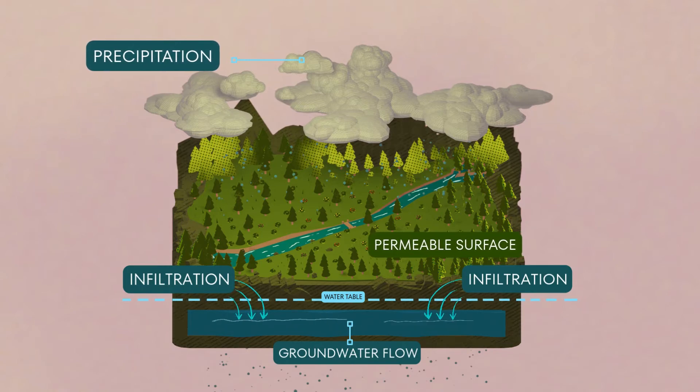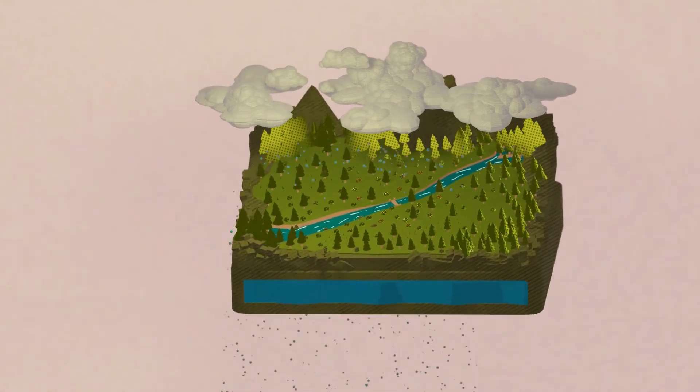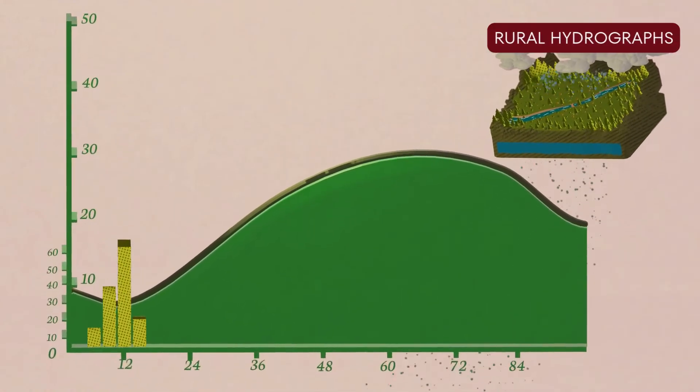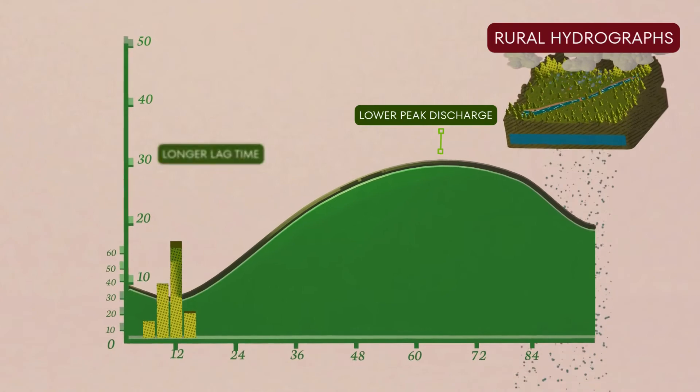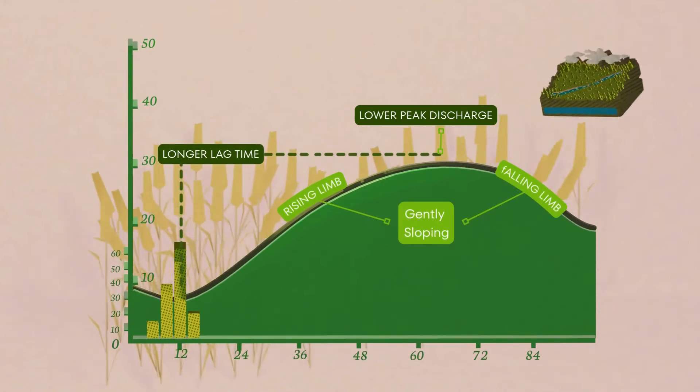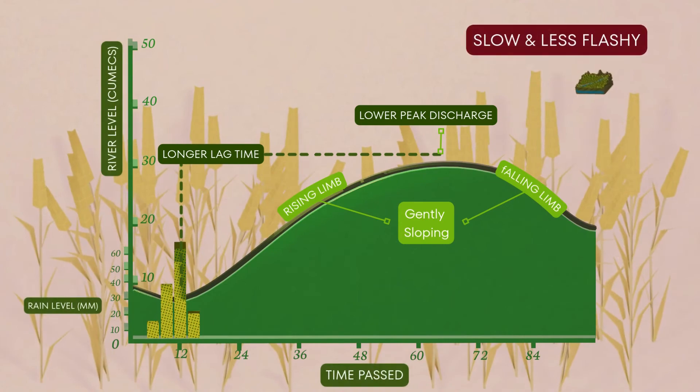That means that the lag time becomes longer, there is a lower peak discharge, and the limbs become gently sloped, both rising and falling. As a result, these rivers respond slowly and produce a less flashy hydrograph.